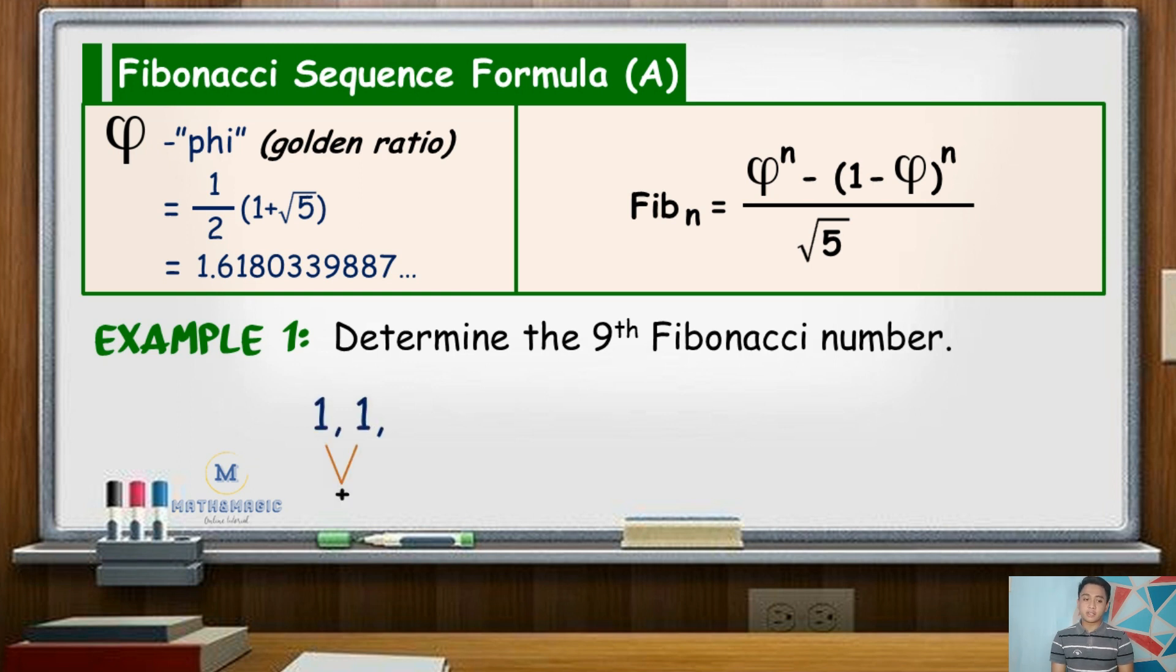Then to get the third term, you need to add the two preceding terms. 1 plus 1 is 2, so the third term is 2. For the fourth term, we will add the second term 1 and the third term 2. The sum is equal to 3. To get the fifth term, we will add the third term 2 and the fourth term 3, so that the fifth term is 5.